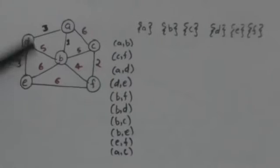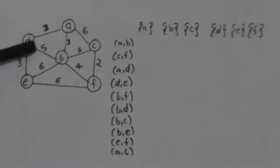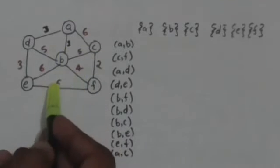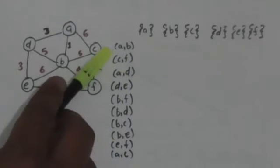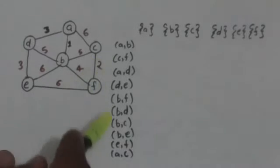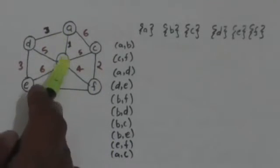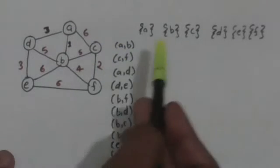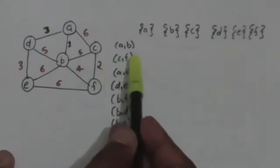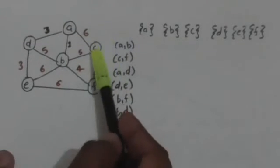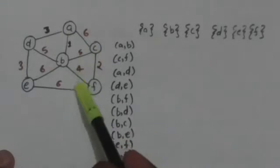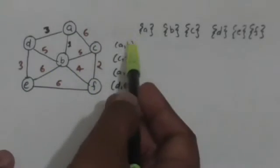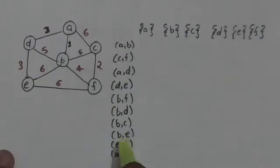Now suppose this weighted graph is given to us and we have to find the minimum spanning tree by using Kruskal's algorithm. First of all, we will write all edges of this graph in increasing order by weight. Edge AB has minimum weight — its weight is 1 — so first we have written edge AB. Then we have written edge CF, whose weight is 2, larger than edge AB but smaller than all other edges of this graph G. So here we have written all the edges of this graph in increasing order by weight.